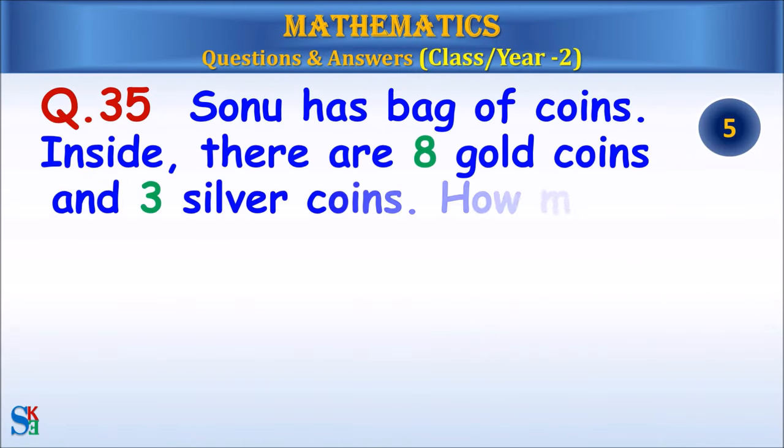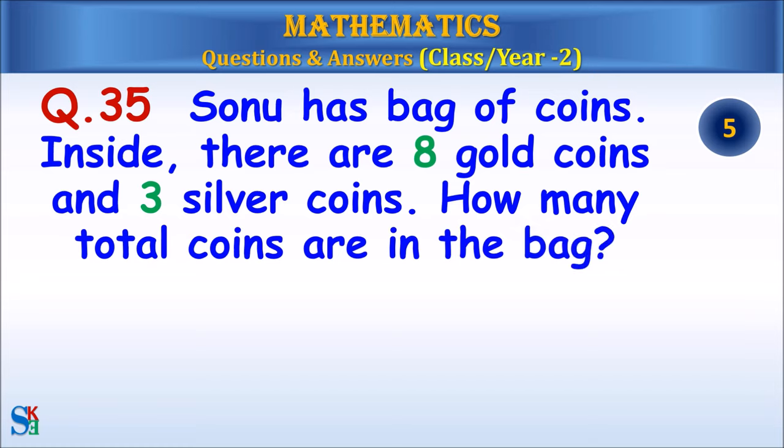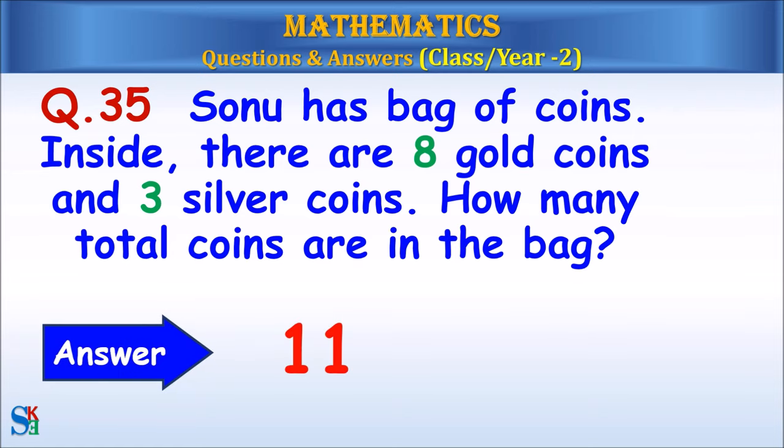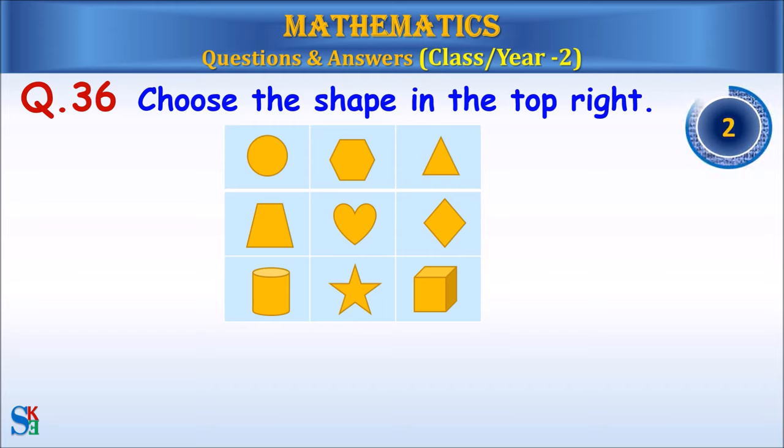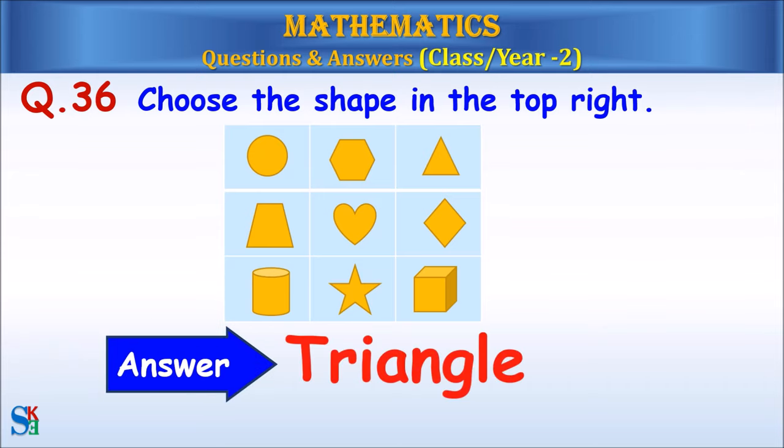Question 35: Sonu has a bag of coins. Inside there are 8 gold coins and 3 silver coins. How many total coins are in the bag? Answer: 11. Question 36: Choose the shape in the top right. What is it? Answer: Triangle.